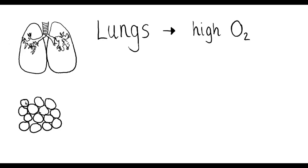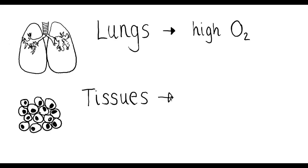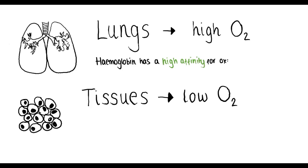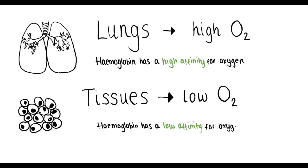In our lungs, we have a high concentration of oxygen, and in our tissues, we have a low concentration of oxygen. So in the lungs, at the alveoli, oxygen has entered the capillaries and it's going to load onto haemoglobin. This is because haemoglobin has a high affinity for oxygen due to the high partial pressure of oxygen. Affinity for oxygen just means the tendency a molecule has to bind with oxygen. By the time blood reaches the tissues, where oxygen is being used up for respiration, haemoglobin has a lower affinity for oxygen, so oxygen readily unloads from haemoglobin for use in respiration.